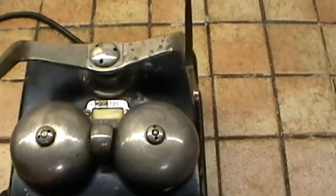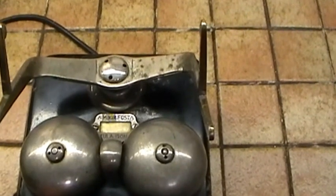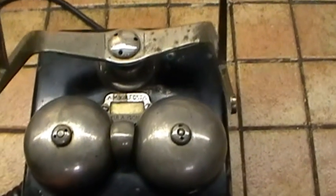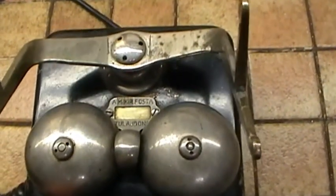So there we are. That's the Ericsson phone, manufactured in Budapest around the 1920s, 24, from Hungary. Very nice and unusual phone.